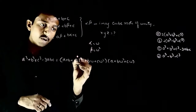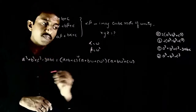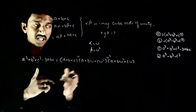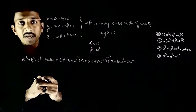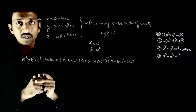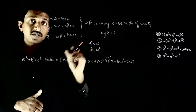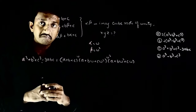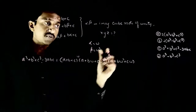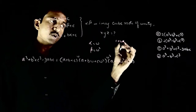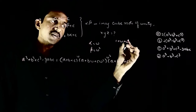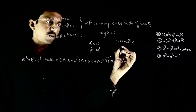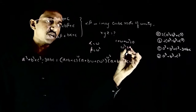Isko omega ke saath multiply karli che, isko omega square ke saath multiply karli che — effectively you are multiplying with omega cube which is equal to 1. Aapko properties of cube roots of unity padha hona chahiye. The properties are: 1 plus omega plus omega square is equal to 0, and omega cube is equal to 1.